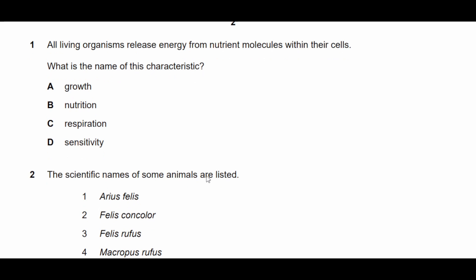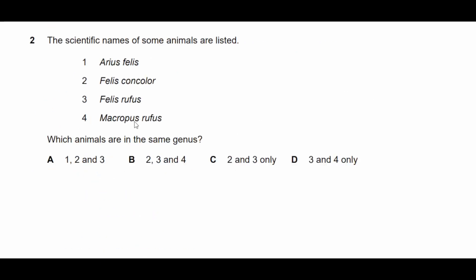Question one: all living organisms release energy from nutrient molecules within their cells. What is the name of this characteristic? When organisms release energy, the process that does this is actually respiration. Therefore, one is C.